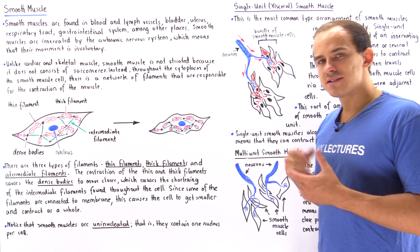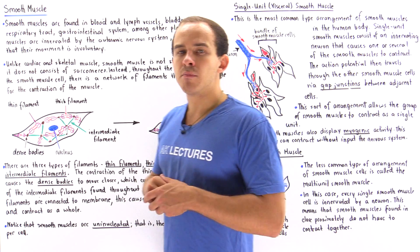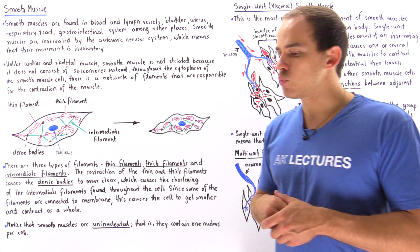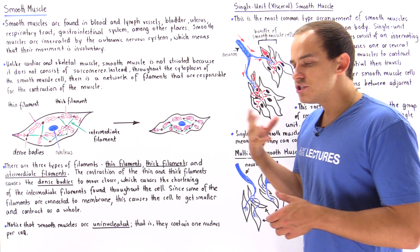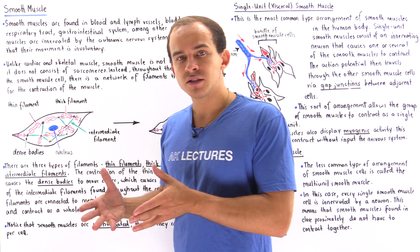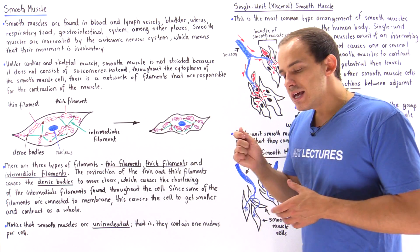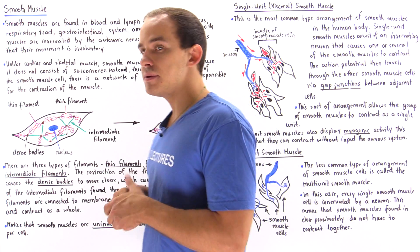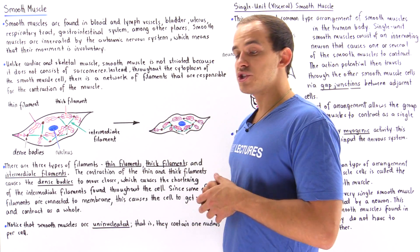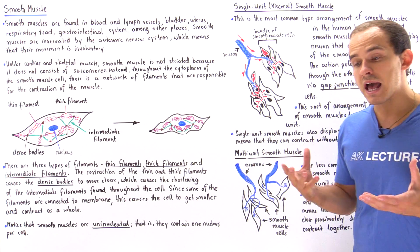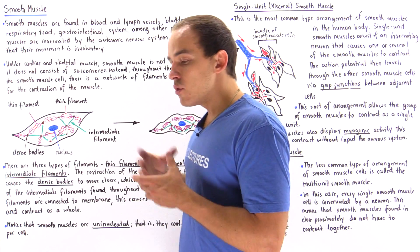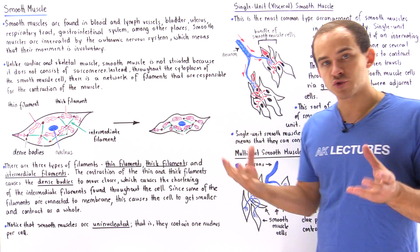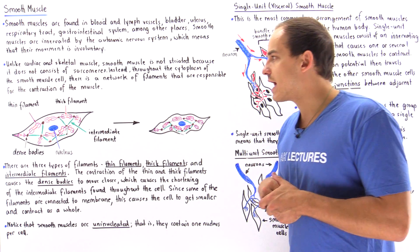Recalling our discussion on skeletal and cardiac muscle, those two types consist of individual units called sarcomeres, which give them striations. Smooth muscles, on the other hand, do not have these striations because they do not consist of sarcomeres. Instead, throughout the entire smooth muscle cell, there is a network of filaments responsible for the contraction of that cell as a whole.